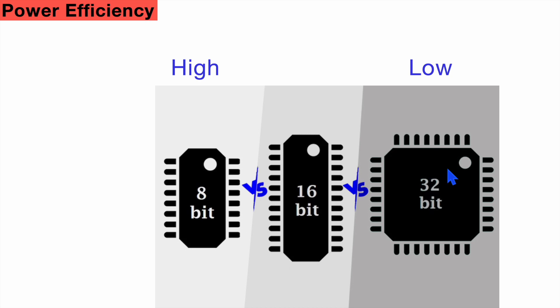Because our processor will be running on higher clock frequency, which will lead to consuming more power. That's why from power efficiency point of view, 8-bit microcontroller has the highest efficiency.